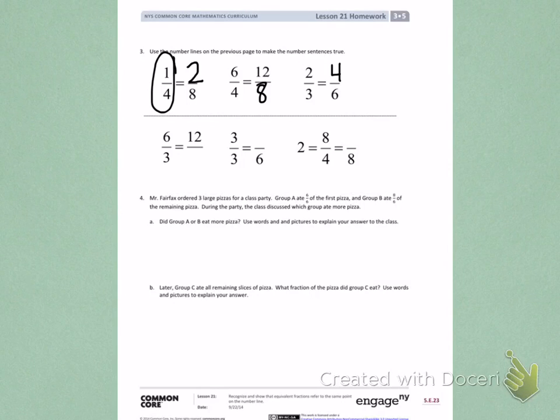Group A ate 6 sixths of the first pizza and Group B ate 8 sixths of the remaining pizza. During the party, the class discussed which group ate more pizza. Did group A or B eat more pizza? Use words and pictures to explain your answer to the class.